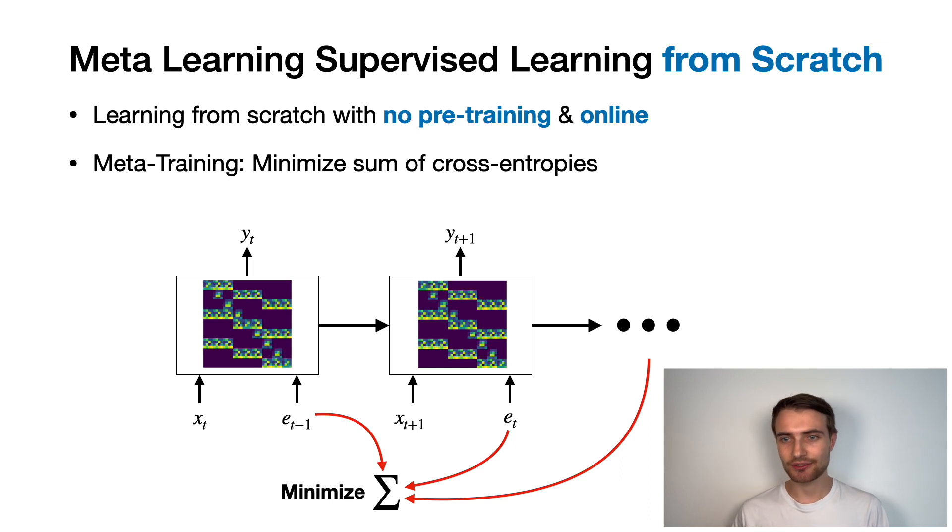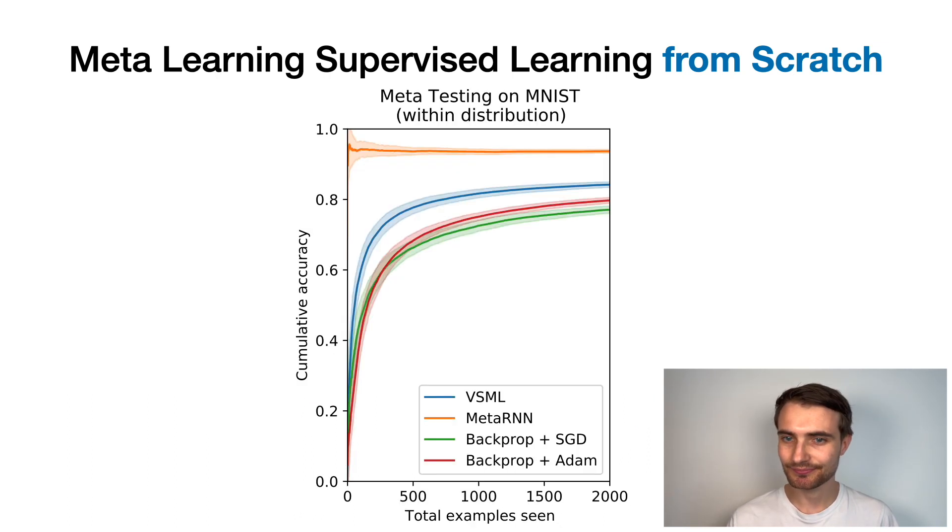Another possibility is to meta-learn supervised online learning entirely from scratch. First, the variable-shared meta RNN is meta-trained on a meta-training distribution, in this example just the MNIST dataset, to minimize the sum of cross-entropies. And that means learning is incentivized to be as sample-efficient as possible. During meta-testing, we plot the accuracy on all previous inputs on the y-axis. Thus starting with low values in the beginning of learning, but then rising very quickly. And learning turns out to be much faster compared to backpropagation with Adam.